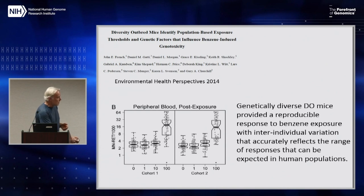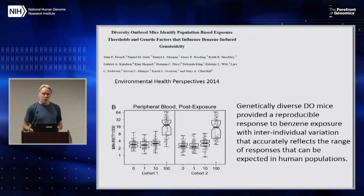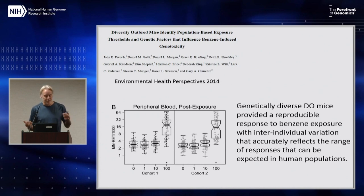and then six months later we did the experiment again with 300 more mice. And in my mind, that is highly reproducible. We reproduced exactly the same mean phenotype and the variance — they're mice and they're reproducible.